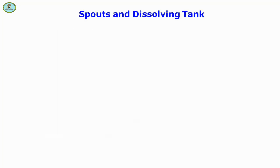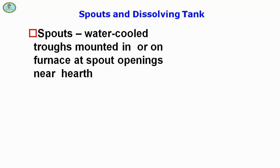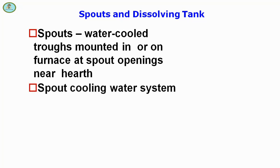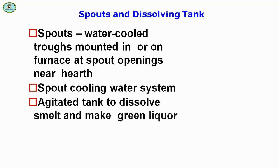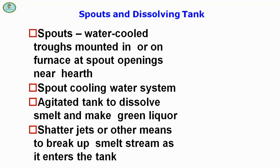Spouts are water-cooled troughs mounted in the furnace at spout openings near the hearth, with a dedicated spout cooling water system. The dissolving tank is an agitated tank used to dissolve smelt and make green liquid. Shatter jets or other means are used to break up smelt steam as it enters the tank.